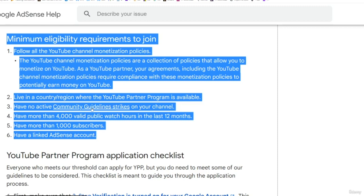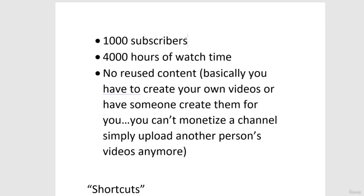Have no community guidelines strikes on your channel. If you're uploading your own videos and not copying someone else's content, this shouldn't apply to you. You need more than 4,000 hours of valid public watch time, more than 1,000 subscribers, and to link your AdSense account. It really just boils down to 1,000 subscribers, 4,000 hours of watch time, no reused content, and original videos — either made by you or someone you hire.